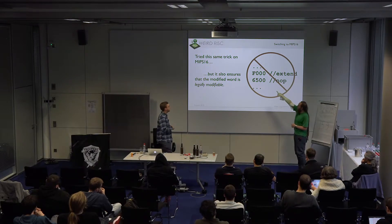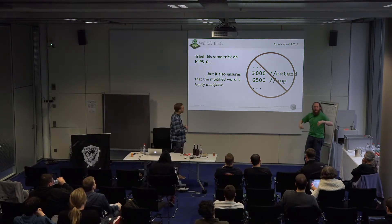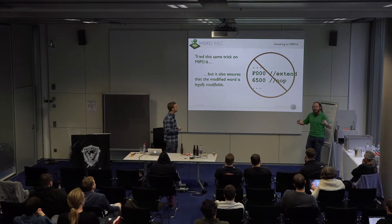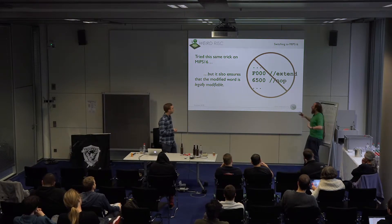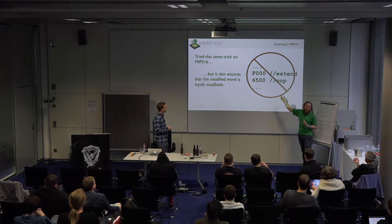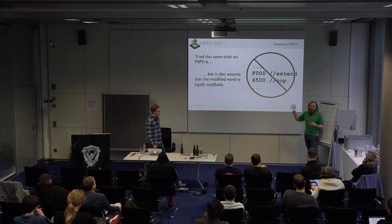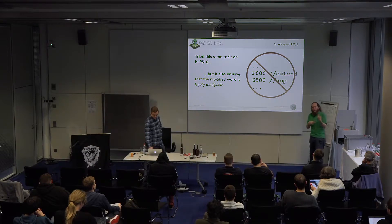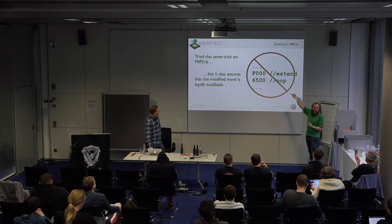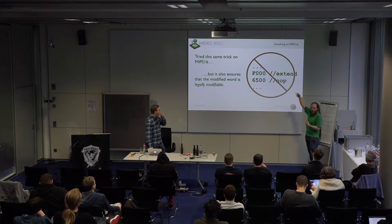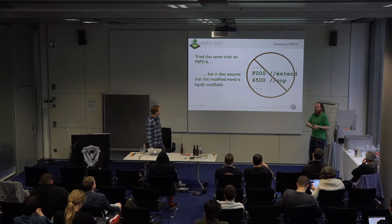To read this: F000 is a prefix word that changes nothing in the instruction that follows — it is like a prefix word that has no effect. 6500 is the no-op. So what this means is: extend the no-op with a longer immediate value, and that value is zero. But the no-op doesn't actually use an immediate value. The CPU will recognize that the prefix is not compatible with this particular instruction — that you can't extend an immediate when you don't have an immediate. And it triggers an illegal instruction error.